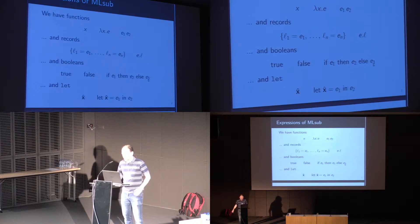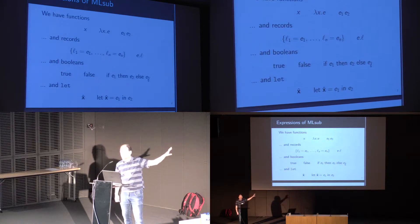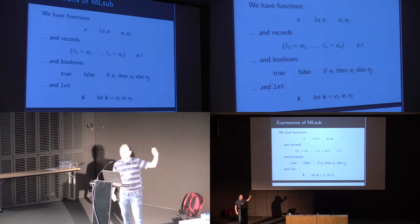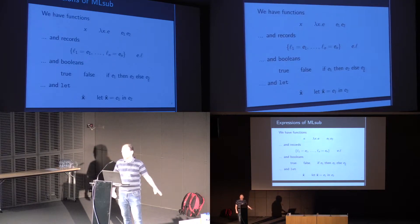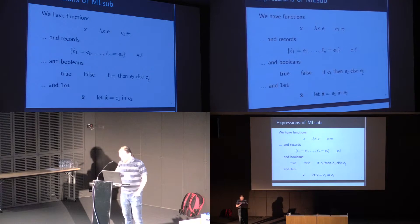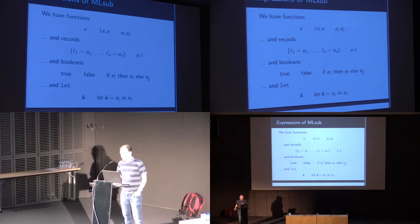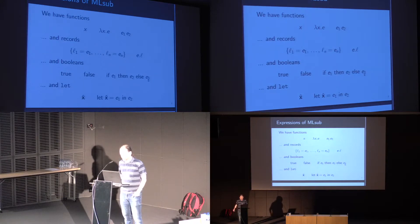And let, the standard thing in ML. I am going to be careful to try and distinguish the variables bound by let from the variables bound by lambda, because those work slightly differently in ML systems. But the expressions are just plain ML, simple types plus polymorphism.